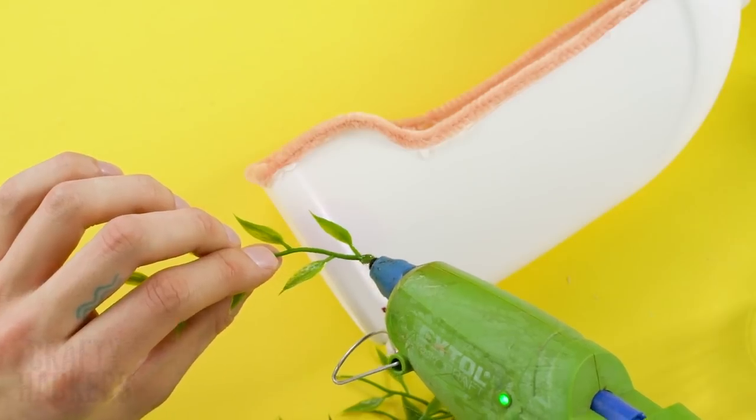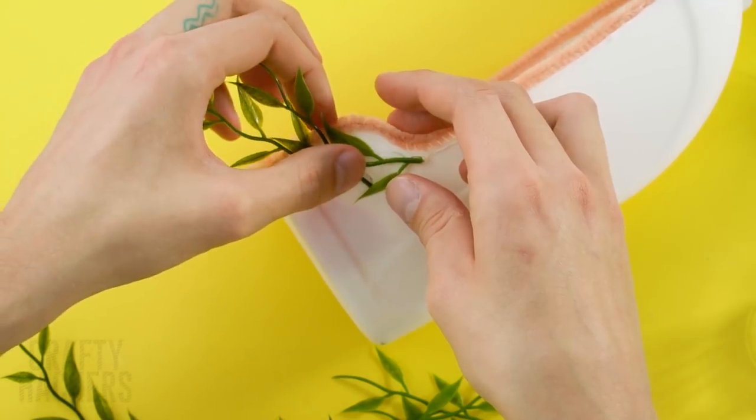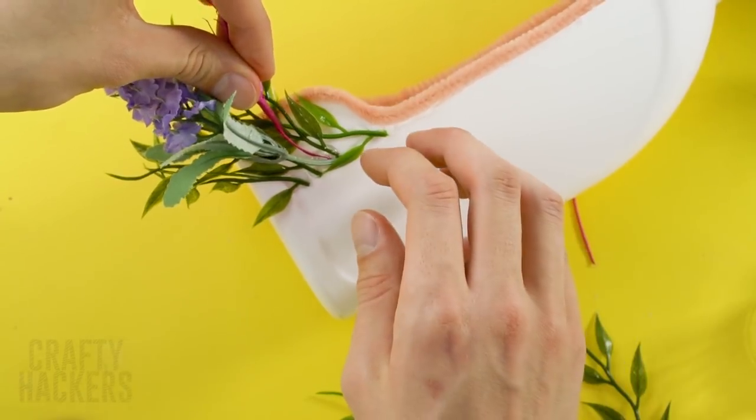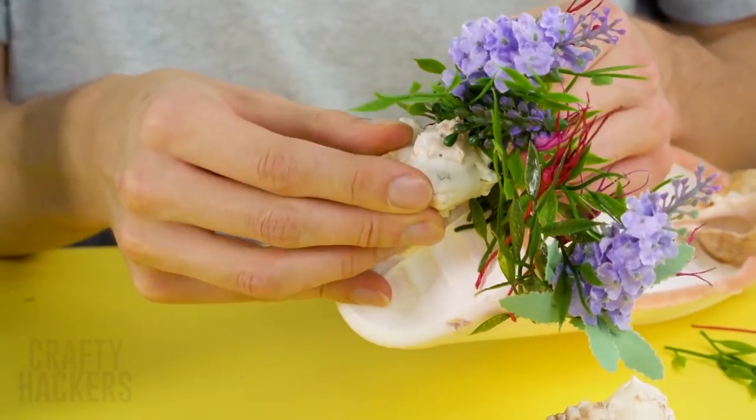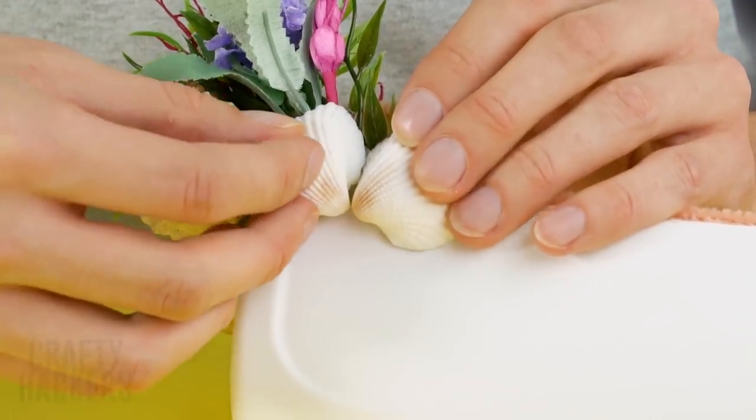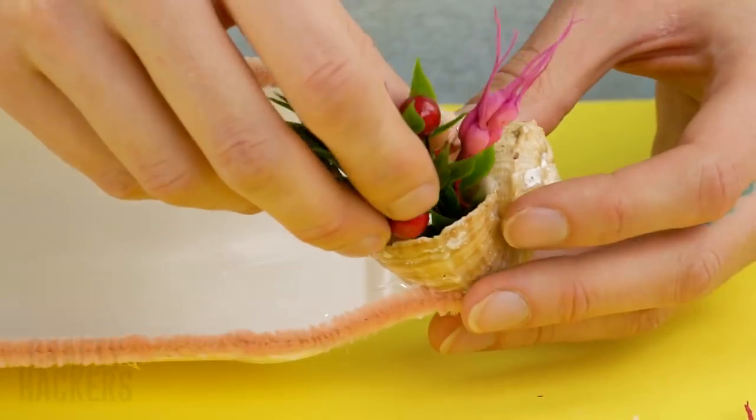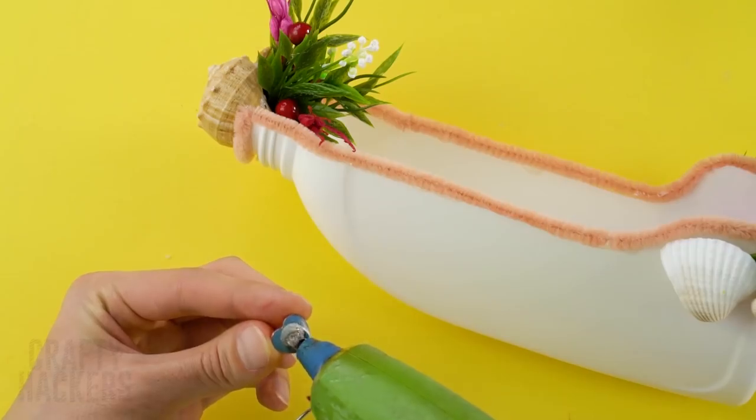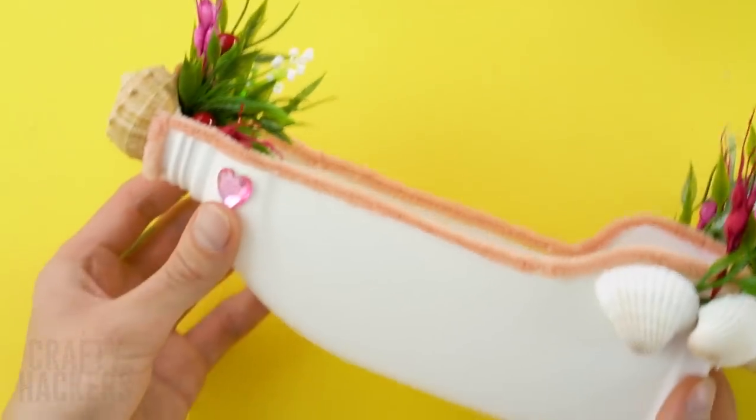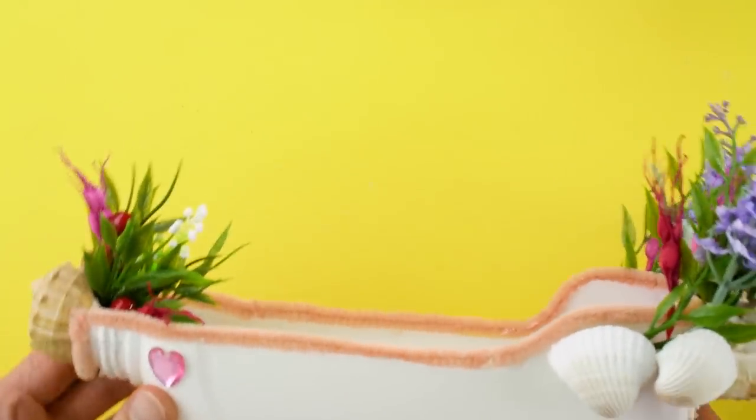Let's add some seashells to the side of the boat as decoration as well. Then glue on some vines, flowers, and leaves to the back. A seashell here, a seashell there, and a bouquet of flowers for the front of the boat. You can add any decorative jewels or beads you like.